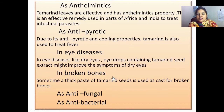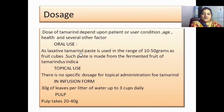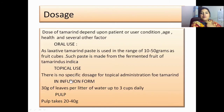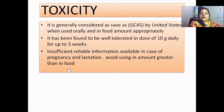In broken bones, a thick paste of tamarind seeds is sometimes used as a cast. Tamarind is also antifungal and antibacterial. Regarding dosage, the dose of tamarind depends on the patient's condition, age, health, and several other factors. For oral use as a laxative, tamarind paste is used in the range of 10 to 50 grams as fruit cubes, made from the fermented fruit of Tamarindus indica. For infusion form, 30 grams of leaves per liter of water, up to 3 cups daily.